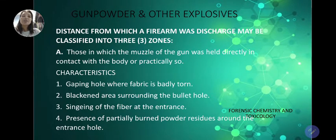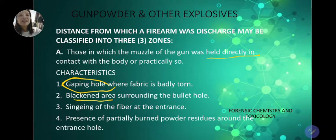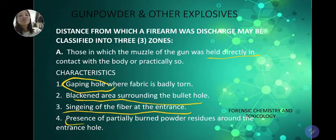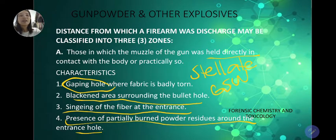The distance from which a firearm was discharged may be classified into three zones. Zone A: the muzzle of the gun was held directly in contact with the body. Characteristics include a gaping hole where the fabric or skin is badly torn, a blackened area surrounding the bullet hole, singeing of fibers at the entrance, and presence of partially burnt powder residues. A contact gunshot wound produces what is called a stellate gunshot wound — due to the extreme pressure at close range, the wound forms a star shape.